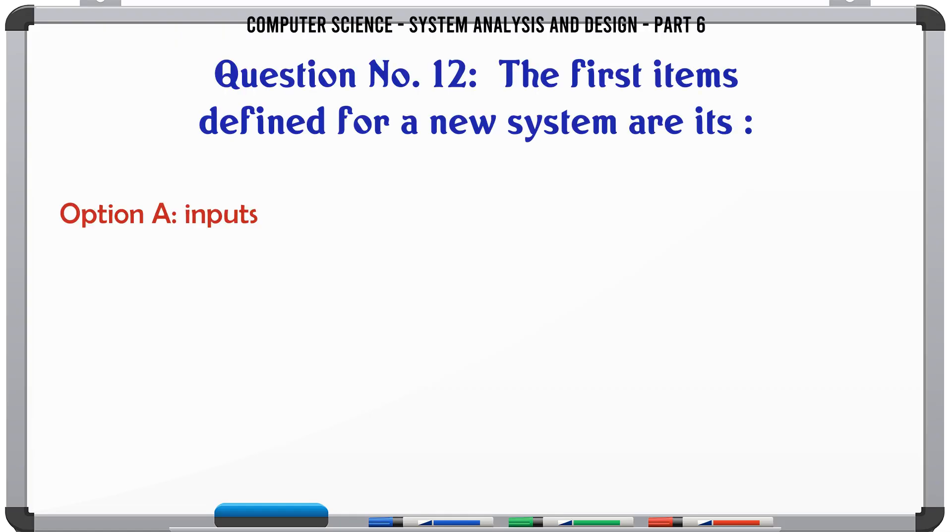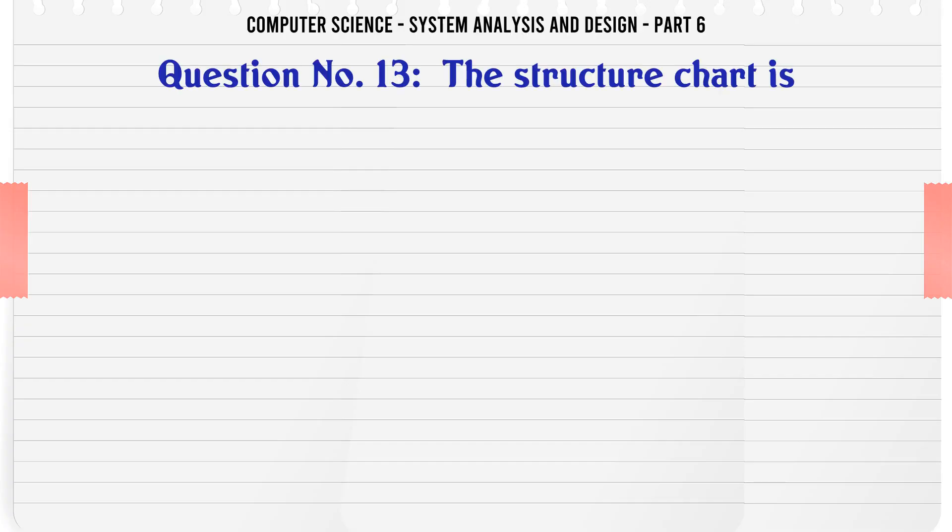The first items defined for a new system are its: A. Inputs, B. Outputs, C. Storage, D. Processing. The correct answer is: Outputs.